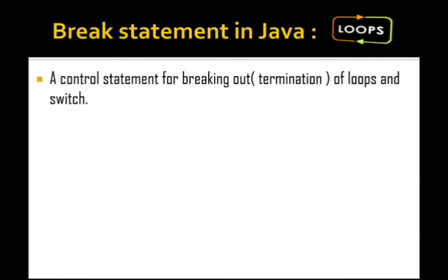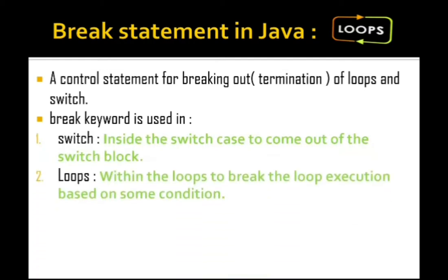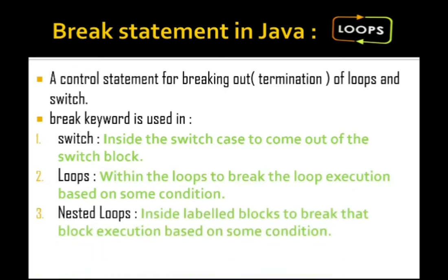Break is a control statement for breaking out of loops or for termination of switch cases. Inside each case of a switch, when we want to close that block, we use break. Within a loop, we can use break for termination, but we need a condition — only when that condition is true do we terminate the loop. In nested loops, using break is referred to as a labeled break.